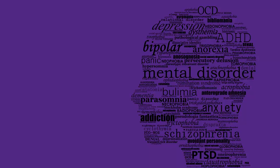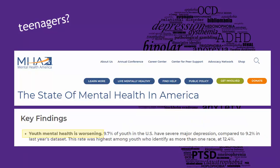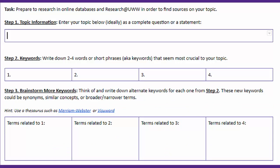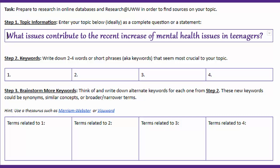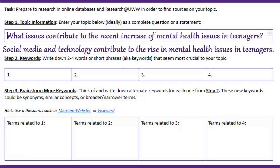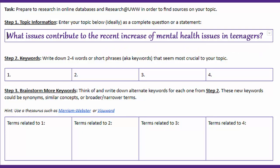So first you need to narrow your topic down to a specific statement or question. I want to study mental health in teenagers, and I'm curious first if there really is an increase in reported mental health issues. A quick Google search confirms that there is. So now I'm getting to a specific question, which I can enter in Step 1 of the Graphic Organizer: "What issues contribute to the recent increase of mental health issues in teenagers?" I could instead state this as something like, "Social media and technology contribute to the rise in mental health issues in teenagers." That's okay too, but for now I'll keep mine as a question, since that leaves me open to consider more possible causes.